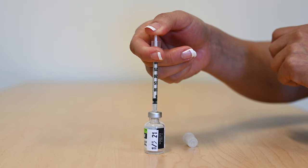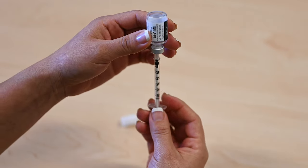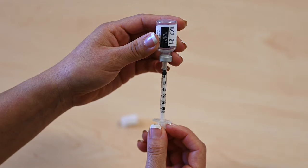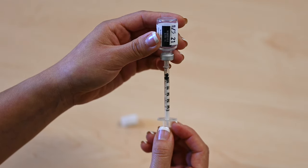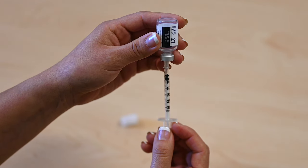Turn the bottle upside down with the syringe still inside while holding the bottle at eye level. Pull back on the plunger to the unit dose that is ordered for you. Do not bend the needle. Make sure the top of the needle is in the insulin.